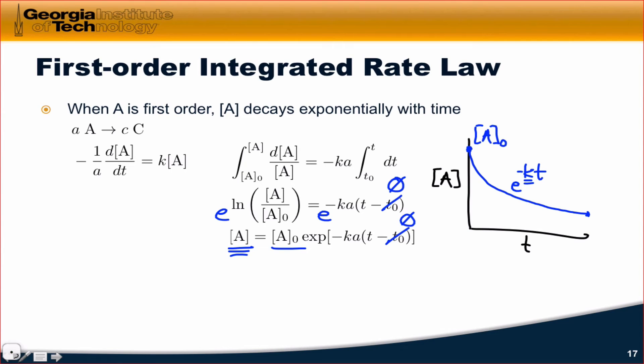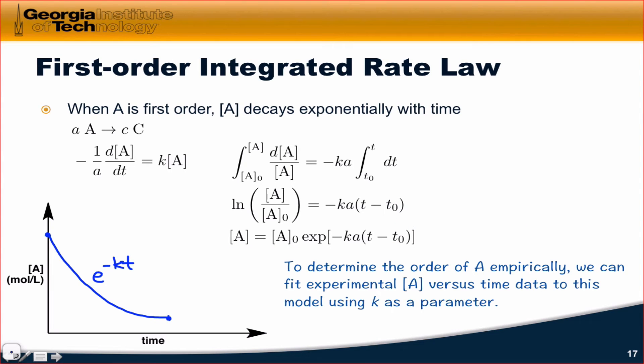The steepness with which this decrease occurs depends on K. The larger K is, the faster a decrease we're going to see. So for example, for a larger value of K, we're going to see a steeper decrease, something like this I'm drawing in red. As I alluded to before, to determine the order of A empirically from experimental data, we can fit experimental concentration versus time data to this model using the rate constant as a parameter. And I won't go into the mathematical details of exactly how to do this, but essentially what we do is we allow K to take on any value and see how good a fit we can achieve using the optimal value of K, and assuming that the model is first order, assuming that it fits this exponential function. If this model fits, for example, better than the zero order model, we could conclude that the order of the reaction is one, M is equal to one.